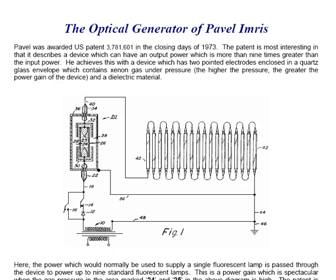The optical generator of Pavel Imres is particularly interesting. Pavel was awarded US patent 3781601 in the closing days of 1973, which is a long time ago now.